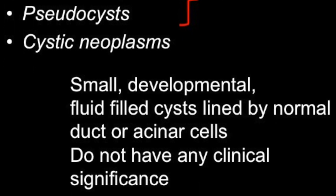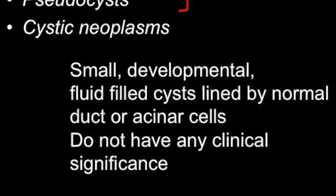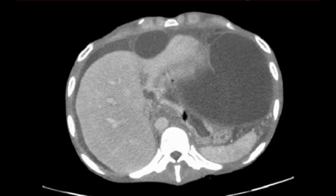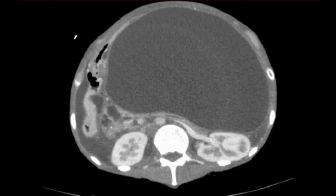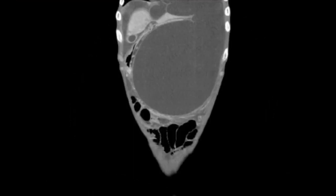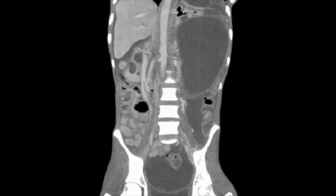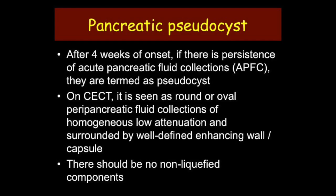Retention cysts are small developmental cysts which do not have any clinical significance. Pancreatic pseudocysts are collections of pancreatic fluid and inflammatory exudates encapsulated by fibrous tissue, usually associated with a history of acute pancreatitis. On CT scan, they appear as well-defined homogeneous fluid-filled cysts without central non-liquified components. They occur in acute pancreatic fluid collections and are termed pseudocysts when they persist for more than four weeks.